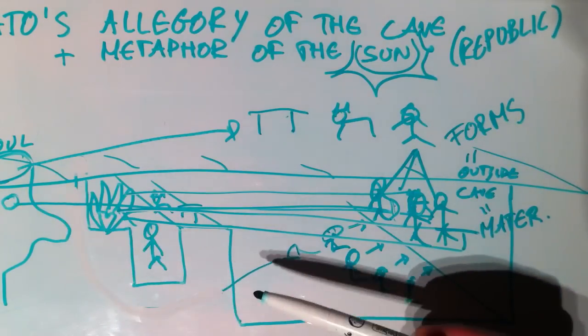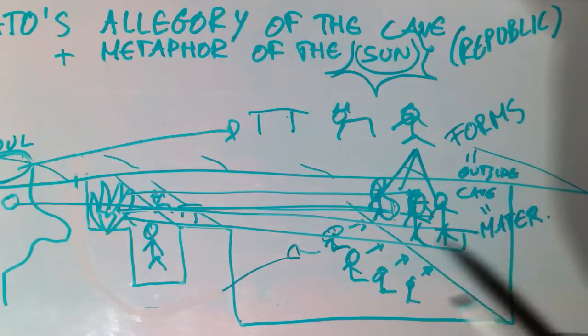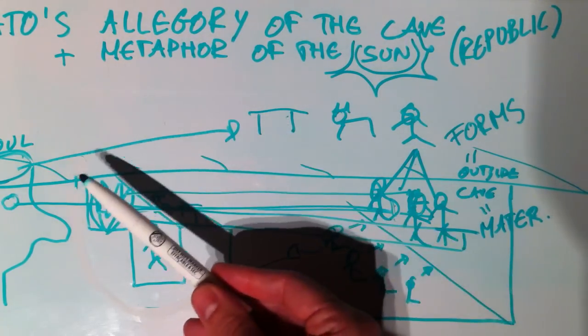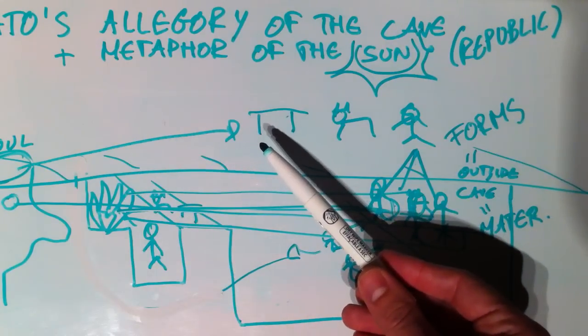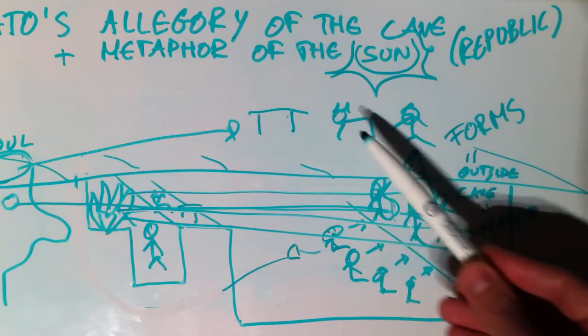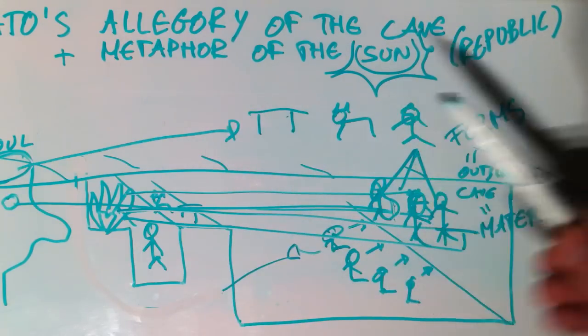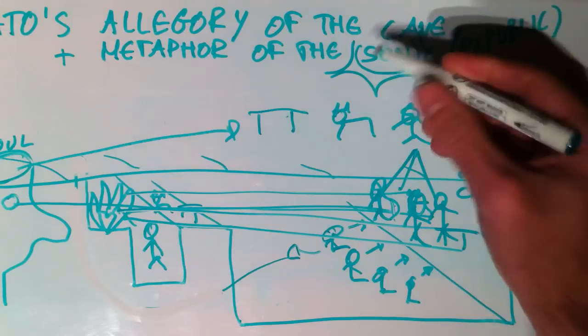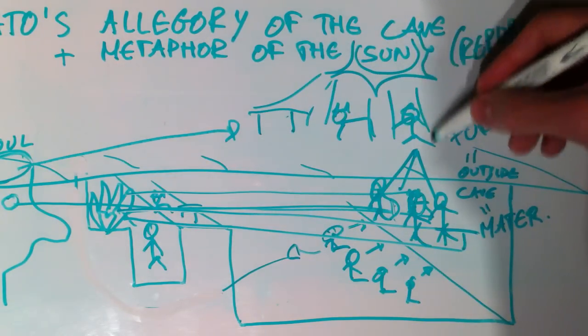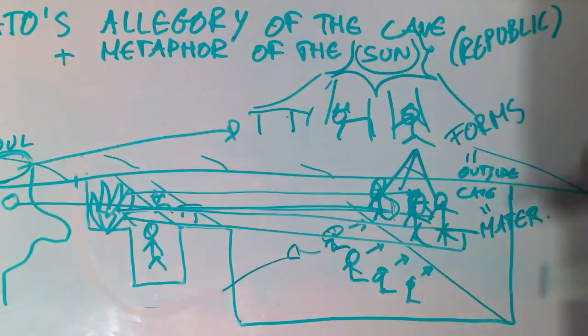Anyway, if we can exit the imprisonment of the cave and grasp the eternal forms, the fact that we can do this is due to the fact that the sun sheds its light on these forms. And now we arrive at the metaphor of the sun. So outside of the cave, the sun shines, and the sun casts its light on all these ideas, on the table, on the cat, on man, etc.